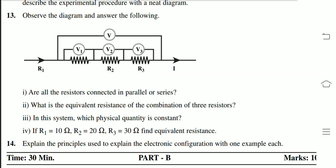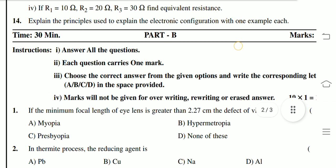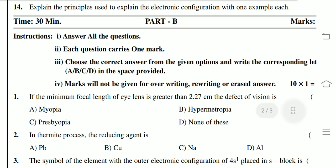Explain the principles used to explain the electronic configuration with one example each. This is Part A. Part B has 30 marks.